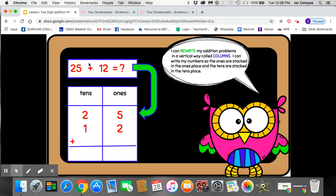I have a plus symbol knowing that I'm adding. I have an equal symbol showing that I need to find the sum. 25 has two tens and five ones. 12 has one ten and two ones.